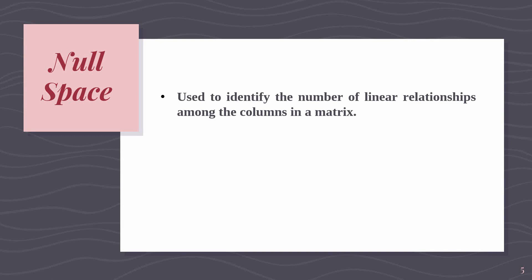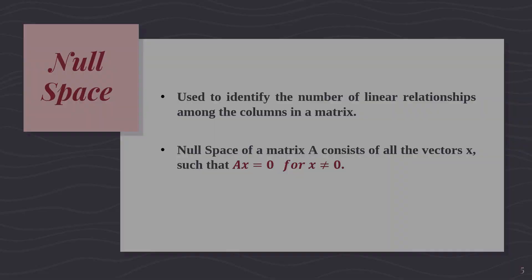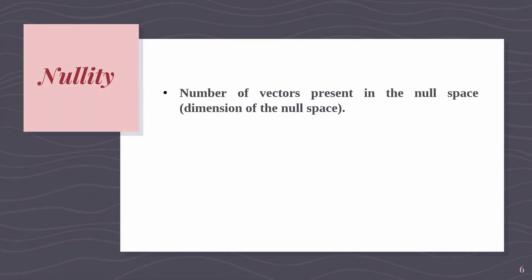Next, the null space is used to identify the total number of linear relationships among all the columns of the Matrix. The null space of a Matrix A consists of all vectors x such that Ax equals 0. So if you take any vector from the null space and multiply it with Matrix A, you get the zero matrix. Nullity is the total number of vectors present in the null space — that is, the dimension of the null space — and it represents the total number of linear relationships among the columns.